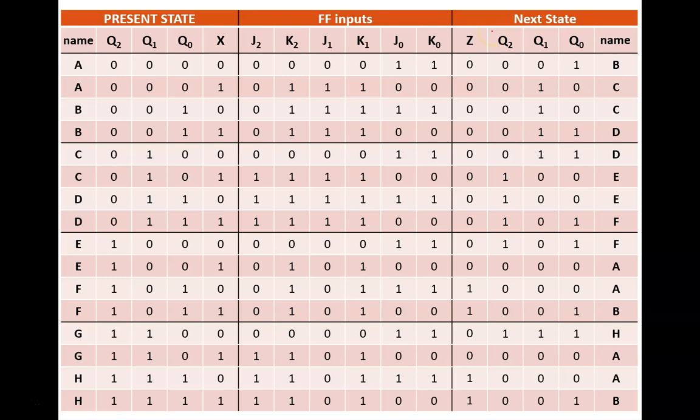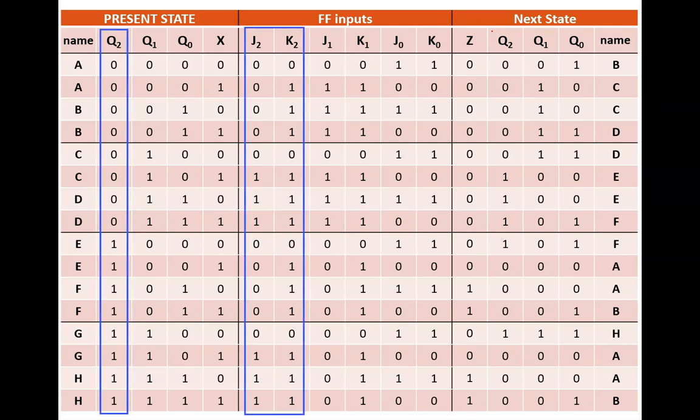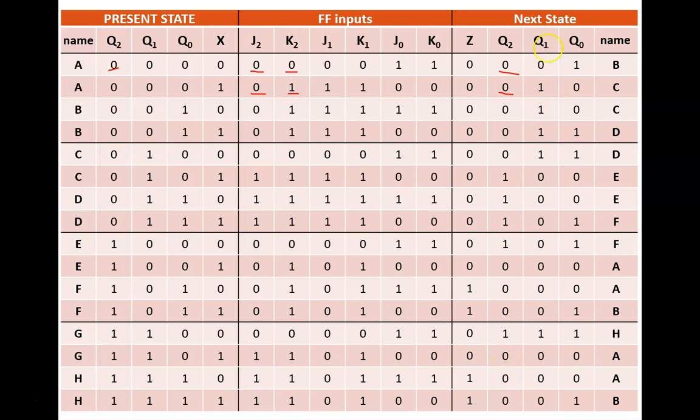Here are my results. Recall that to complete these q columns, reference the flip-flop characteristic table, and focus purely on columns with matching subscripts. So, for the next q2, I look at the present q2, j2, and k2. This top row is in no-change mode, so the starting 0 remains a 0. The second row is in reset mode, so q2 is forced to become a 0. Repeat this all the way down for q2, then repeat for q1, then q0.